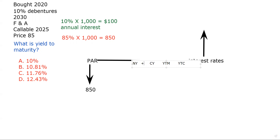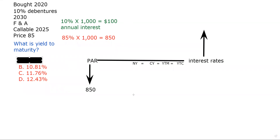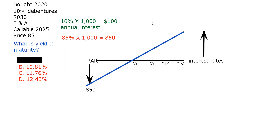That's helpful because once I get that flat line, I can eliminate choice A. By process of elimination, that's not it, because that would be a bond at par. Then I'm going to draw on my teeter-totter the line that represents a bond at a discount. That's helpful because I now know that the yield to maturity is somewhere greater than 10%.